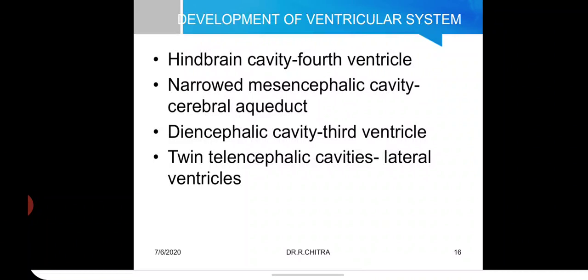The ventricular system develops as follows: the hindbrain cavity becomes the fourth ventricle; the narrowed mesencephalic cavity becomes the cerebral aqueduct; the diencephalic cavity becomes the third ventricle; and the telencephalic cavities become the paired lateral ventricles. The central canal of the neural tube has thus been modified in the brain to form the ventricular system.